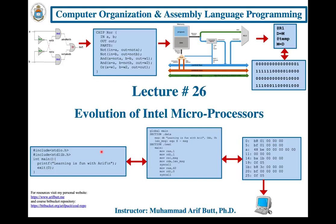Dear students, this is the first session of the second half or post-mid part of our course. In the first half of the course, we started with the universal NAND gate, designed and wrote the HDL of a full-blown 16-bit von Neumann computer having a CPU consisting of an ALU, three registers and a control unit, and two separate memory modules serving as instruction memory and data memory.